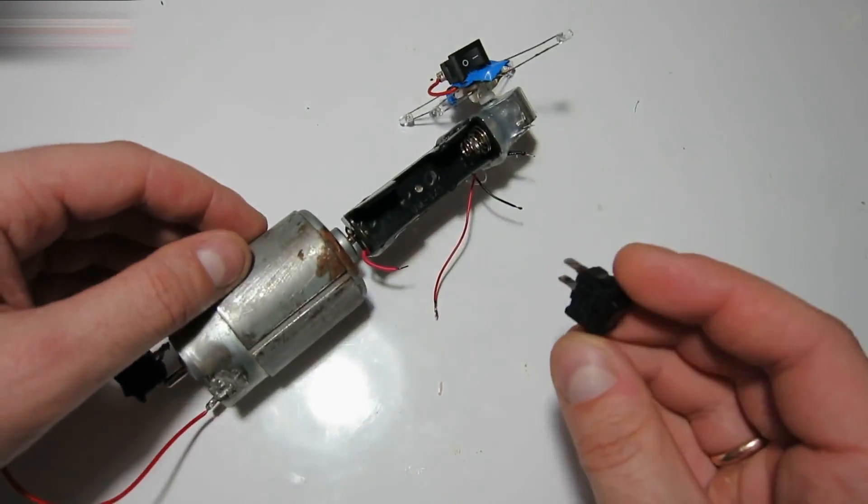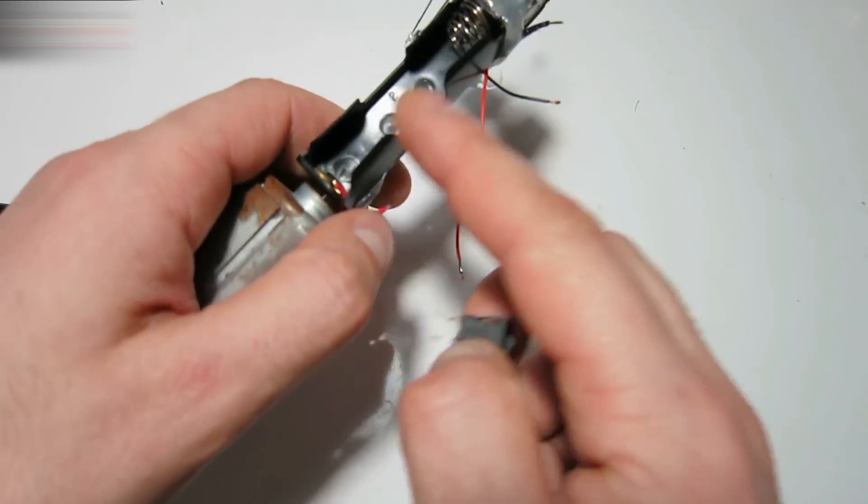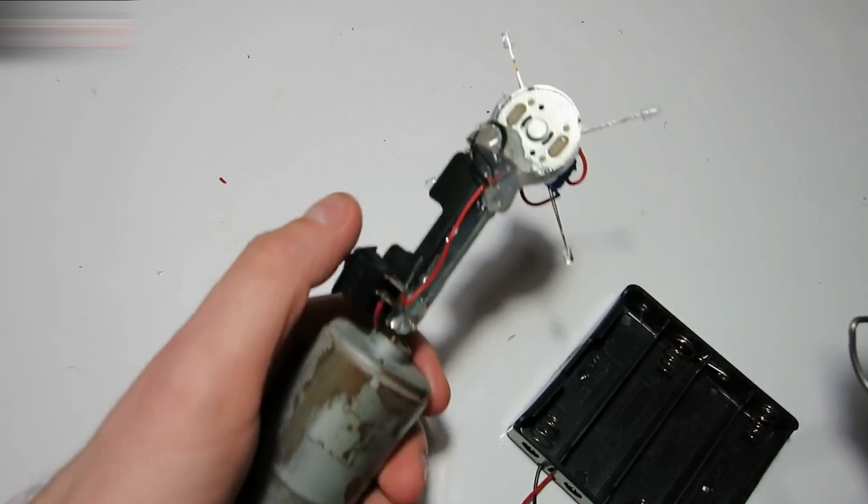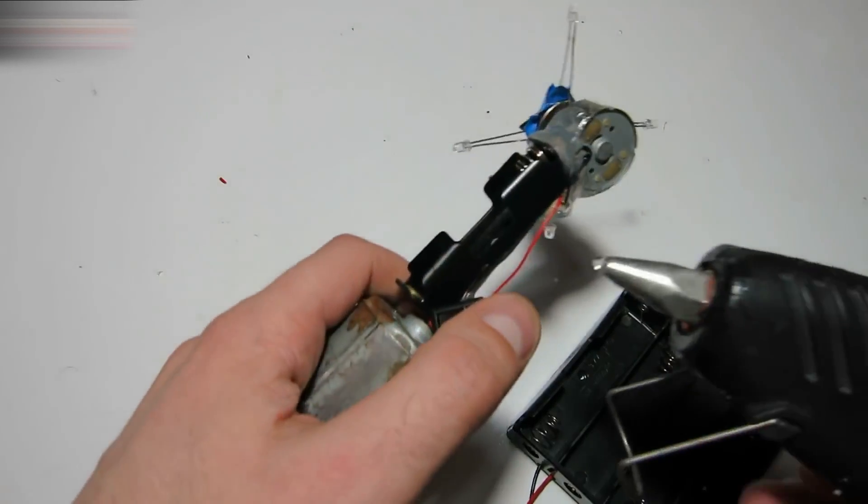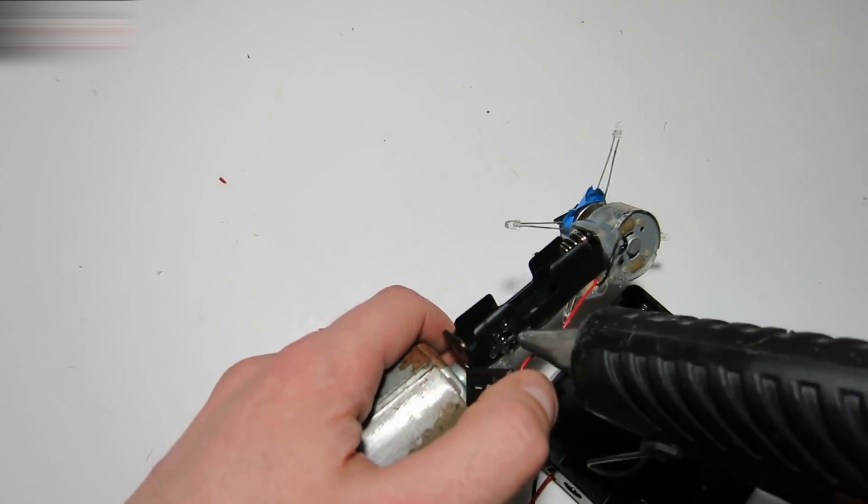Solder the second switch to the motor power wires. It should look like this. Glue the second switch and the wire like this.